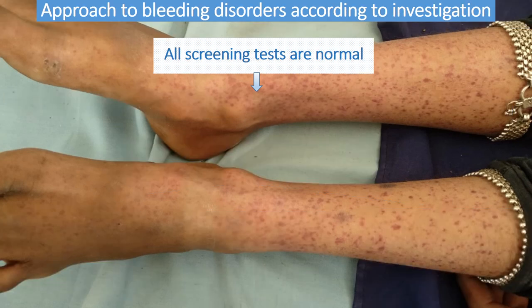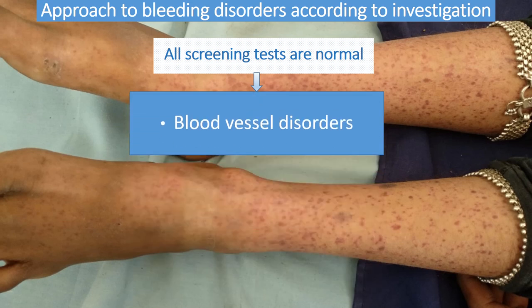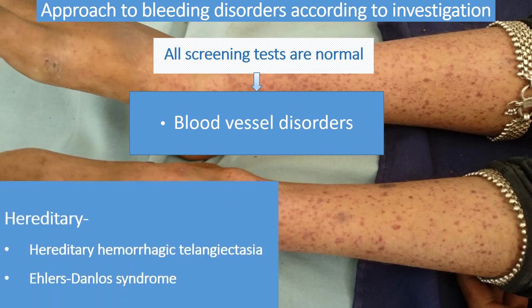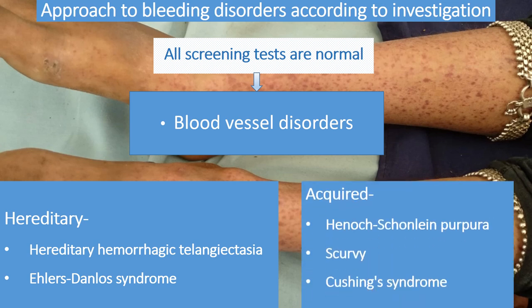If all screening tests are normal, also think about vasculitis. It can be congenital — such as hereditary hemorrhagic telangiectasia or Ehlers-Danlos syndrome — or acquired, such as Henoch-Schönlein Purpura, scurvy, or Cushing syndrome. In all these, screening tests will be normal but the child has bleeding manifestations due to vasculitis.